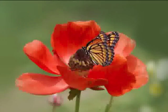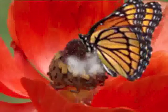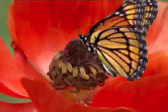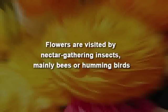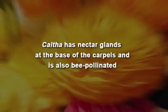In the case of Delphinium or Aquilegia, there are modified nectar-secreting petals — petals which secrete nectar — and these petals are sometimes spurred. The flowers of these genera are visited by nectar-gathering insects, not pollen-gathering insects. Mainly, the insects that pollinate these flowers are bees, or sometimes hummingbirds. In the case of Caltha, there are nectar glands at the base of the carpels, and here also the flowers are bee-pollinated.